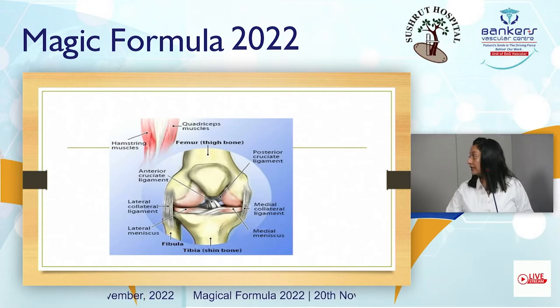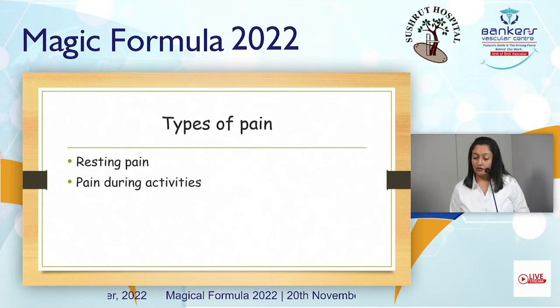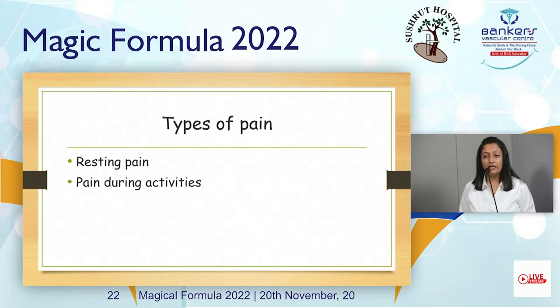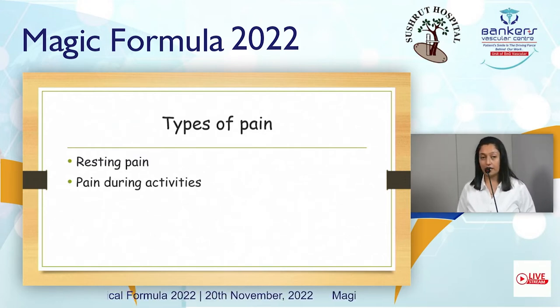Here we can see the structure of the knee joint. There are many kinds of pain, but two main types are resting pain and pain during activities.